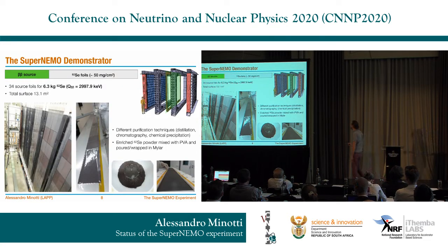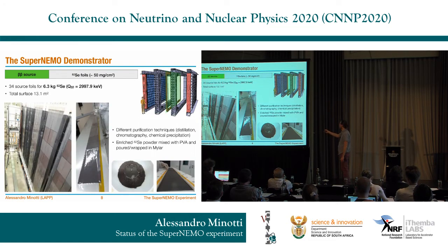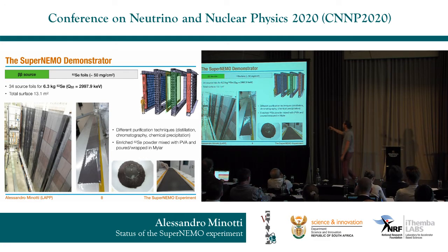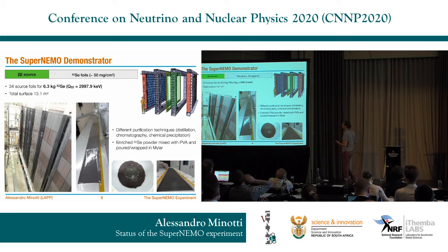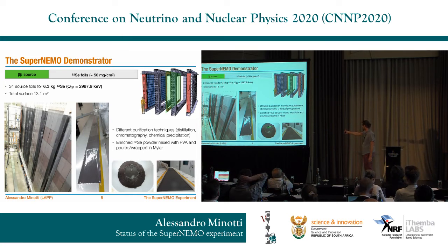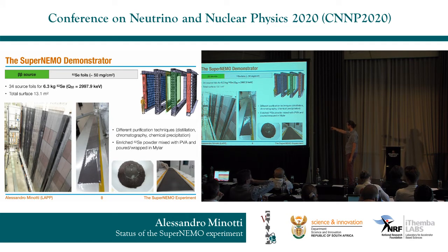The SuperNEMO demonstrator consists of, first of all, a source foil. We have 34 source foils with a total mass of 6.3 kilos of selenium-82, which has a Q-value of roughly 3 MeV. The total surface is 13 square meters, arranged one after another to form a flat surface. To produce this foil, you first purify your selenium using different techniques. Once you have the purified material, you mix it with PVA, pour it, and wrap it in mylar to produce the source foil, which is then hung to form our source.